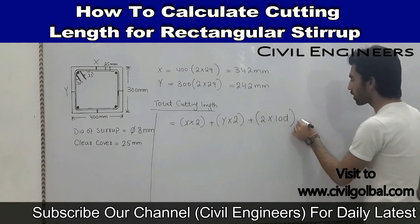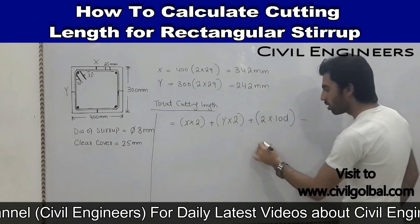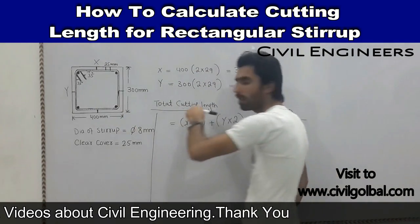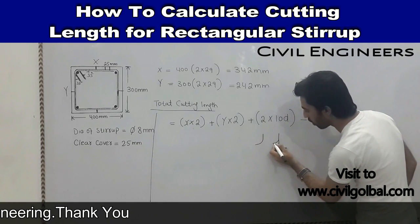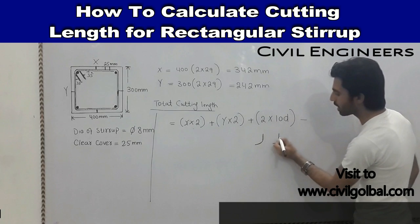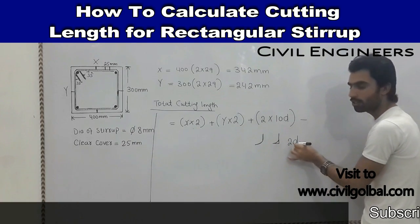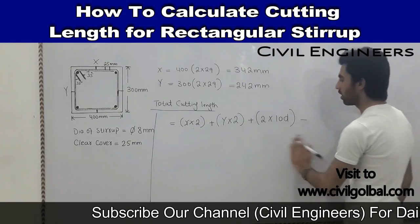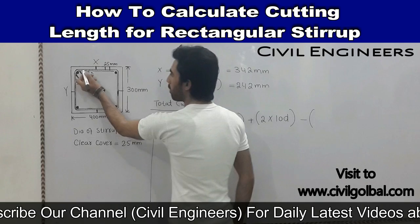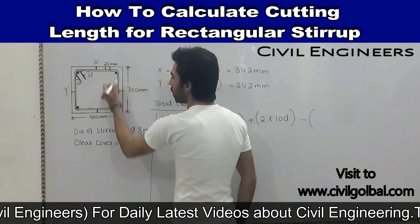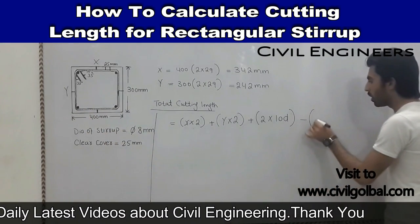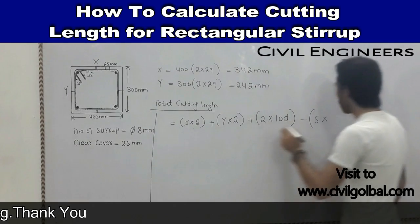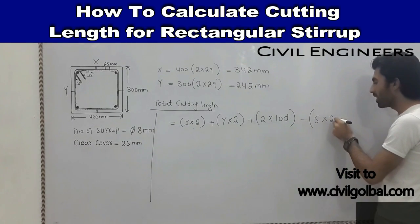We also subtract for the bends. When we make a curve or bend, we subtract 2d as a constant value, where d is the diameter which is 8mm. Counting the bends: 1, 2, 3, 4, 5 — we have 5 bends. So we subtract 5 multiplied by 2d from the total.